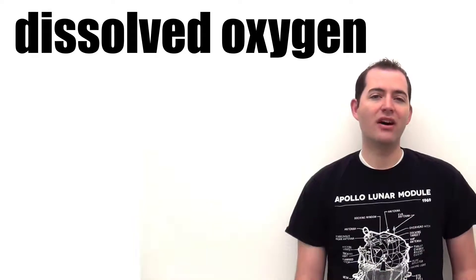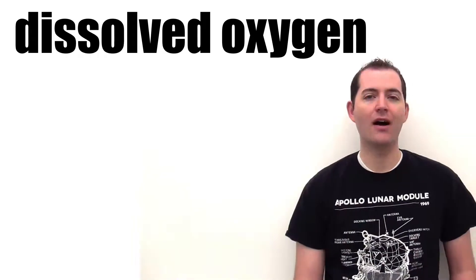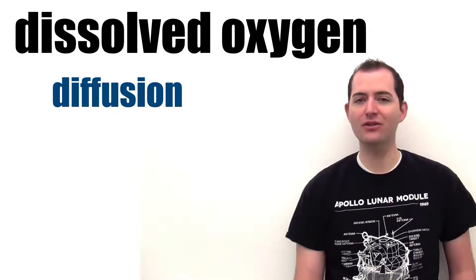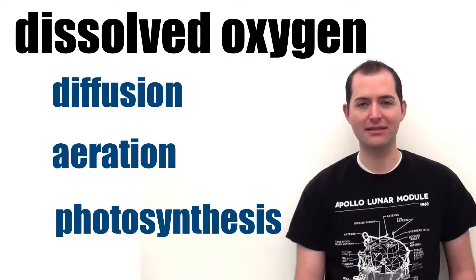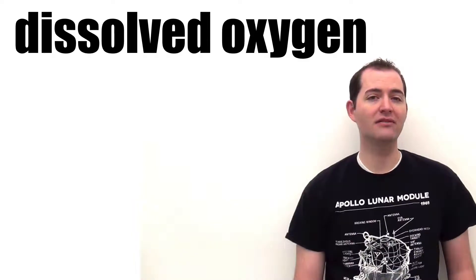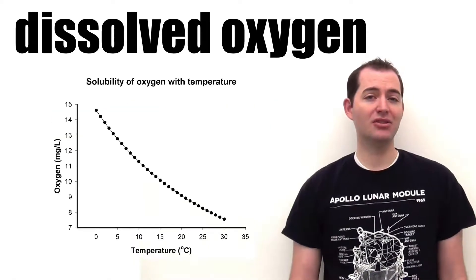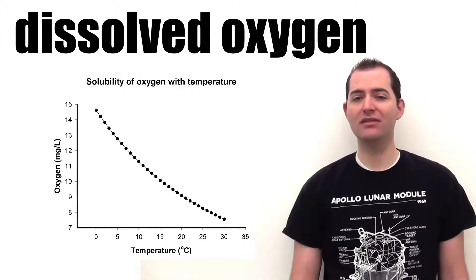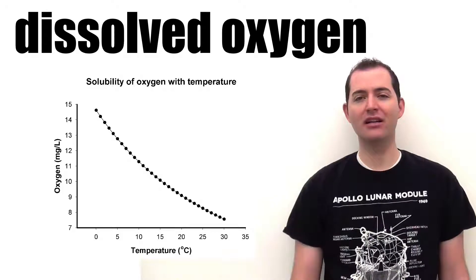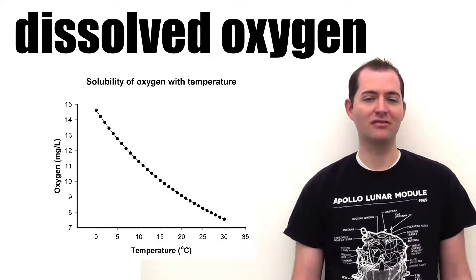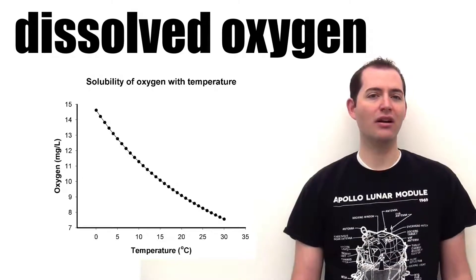Dissolved oxygen is the amount of oxygen that has been dissolved into the water and is a great indicator of how healthy a water system is. Oxygen gets into the water through diffusion from the air, through aeration from tumbling water, and as a waste product of photosynthesis. Each type of aquatic animal requires a different amount of dissolved oxygen, and dissolved oxygen is greatly affected by the temperature of the water. As the temperature of the water increases, the amount of dissolved oxygen that the water can hold physically decreases. The opposite is also true — as the water gets colder, it can hold more and more dissolved oxygen.